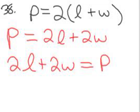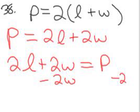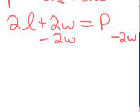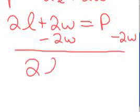And again, now it's just like that linear problem. So we're going to minus the 2W from P. And so 2L equals P minus 2W.